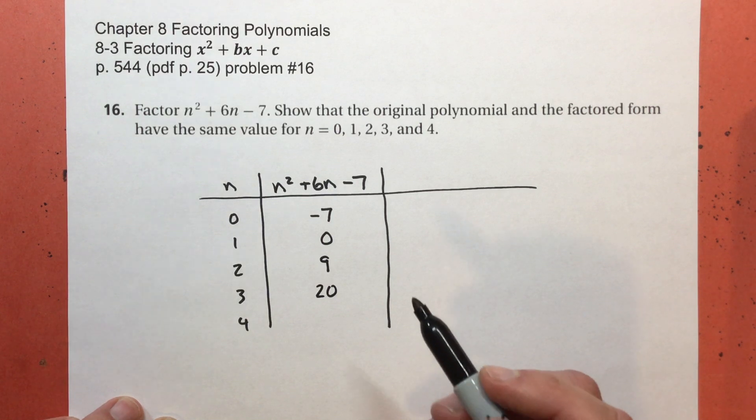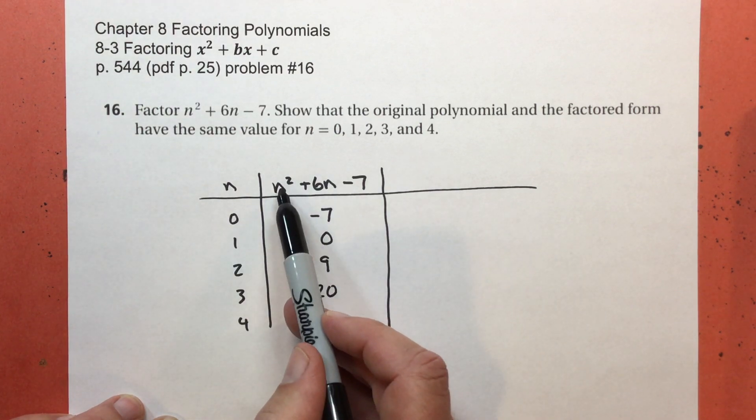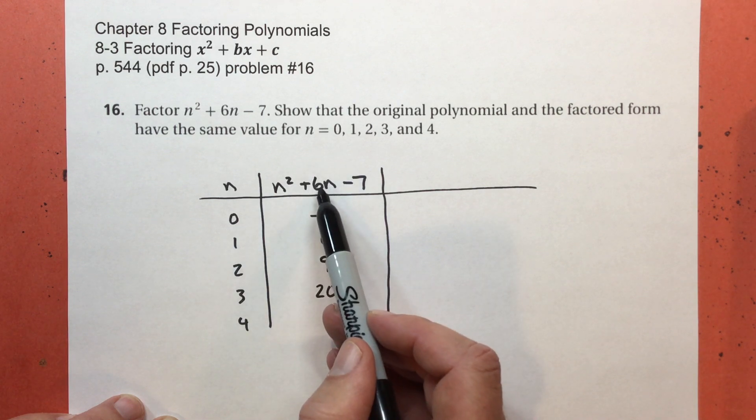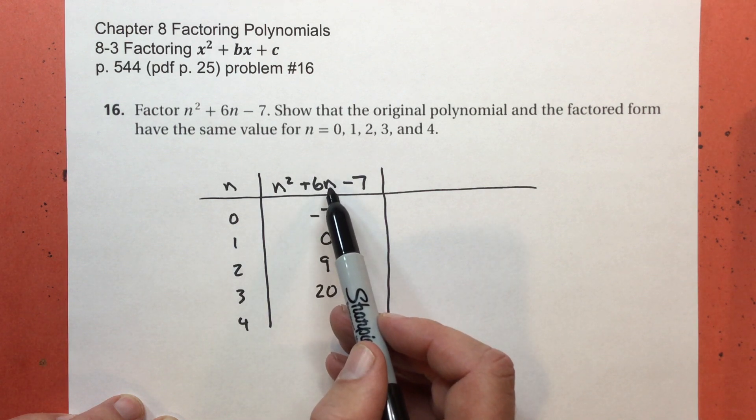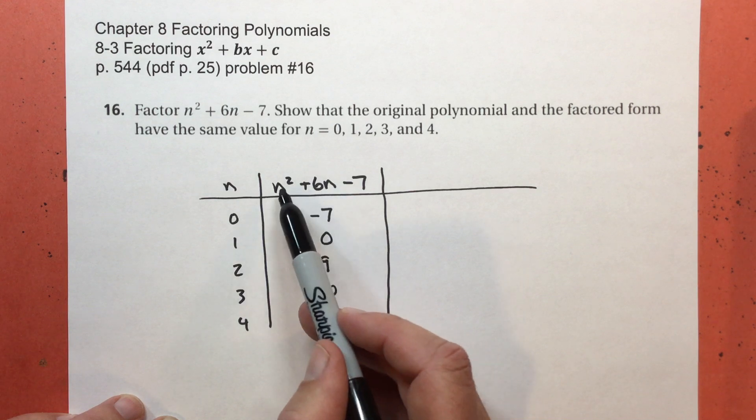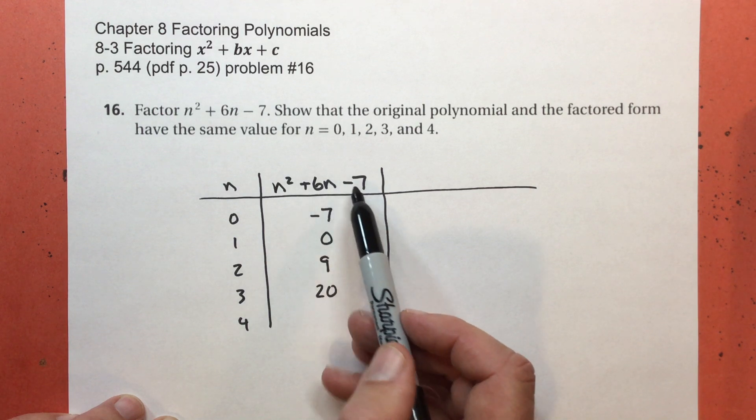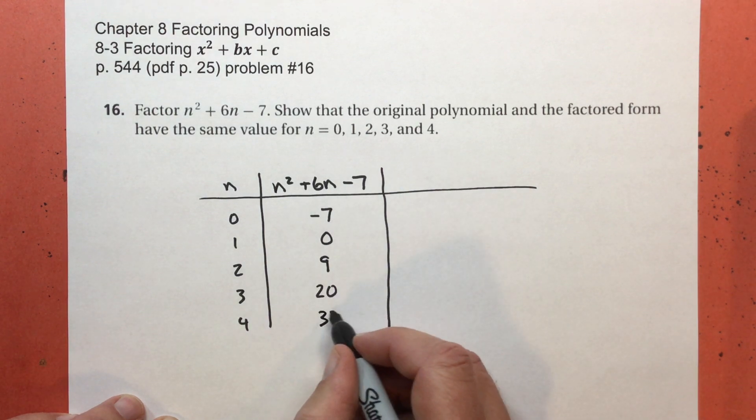And the last one, 4 to the second power is 16. 6 times 4 is 24. 16 plus 24 is 40. And 40 subtract 7 will be 33.